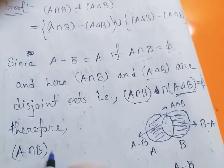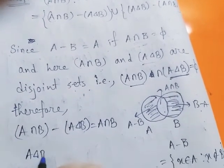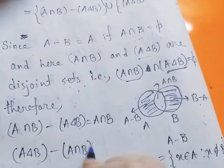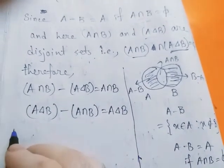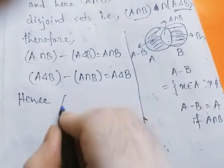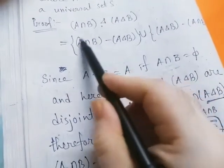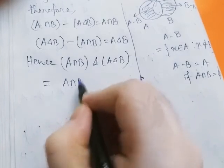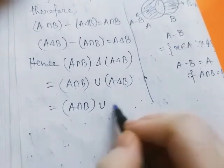A intersection B minus A delta B equals simply A intersection B, and A delta B minus A intersection B equals simply A delta B. Hence, A intersection B delta A delta B equals A intersection B union A delta B, which equals A intersection B union A minus B union B minus A.